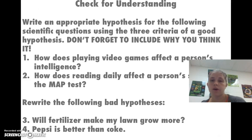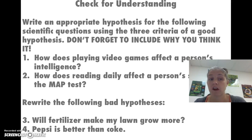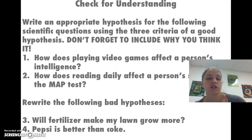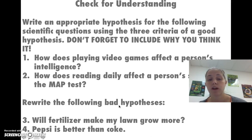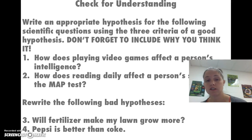So for your check for understanding, in your scientific notebook write an appropriate hypothesis for each of the following scientific questions using the three criteria of a good hypothesis. Don't forget to include the because — or why you think it's happening. Question one: how does playing video games affect a person's intelligence? Question two: how does reading daily affect a person's score on the MAP test? Also rewrite the following bad hypotheses so that they are better phrased. Go ahead and pause and do this in your scientific notebook.